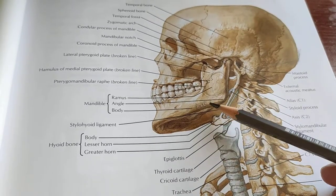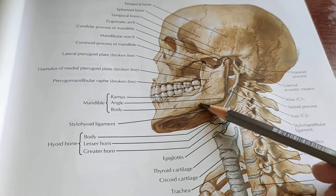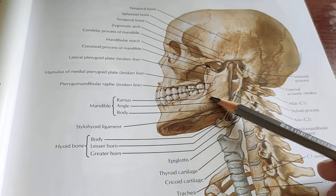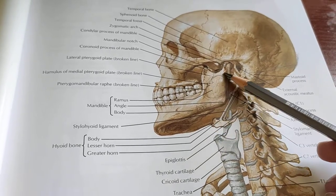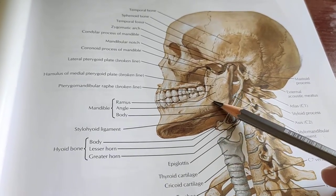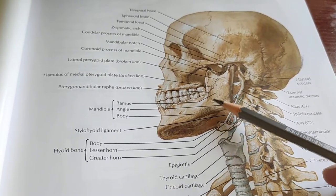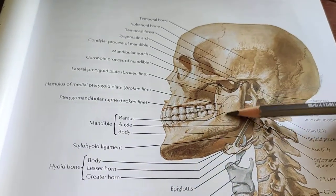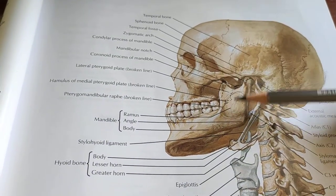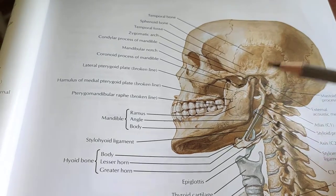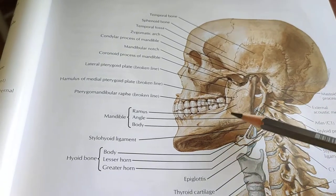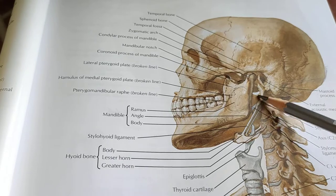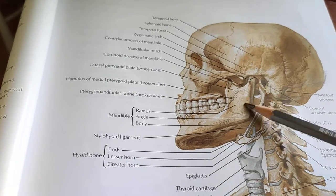The superficial lamina of the investing layer, which encloses the parotid gland from outside, is also known as the parotid fascia. It attaches to the zygomatic arch. The deep lamina of the parotid fascia attaches to the styloid process and the mandible.